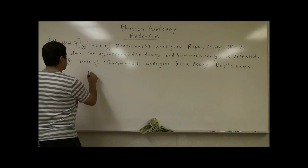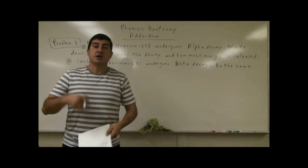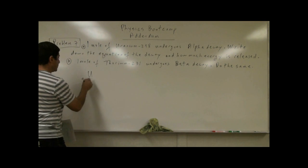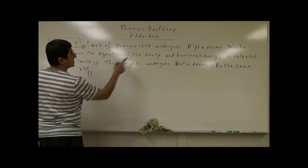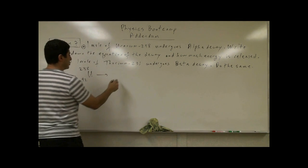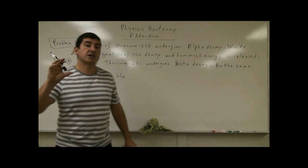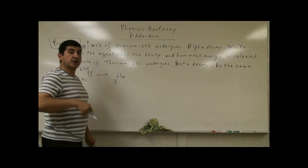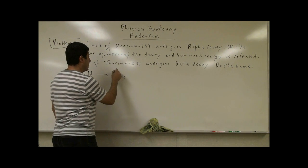So uranium-238, we write down the uranium atomic number is 92. It has 92 protons, 238, and it is undergoing alpha decay. Alpha decay means it's the nucleus of the helium atom. It has two protons and it has two neutrons. Therefore, its total atomic mass is four.